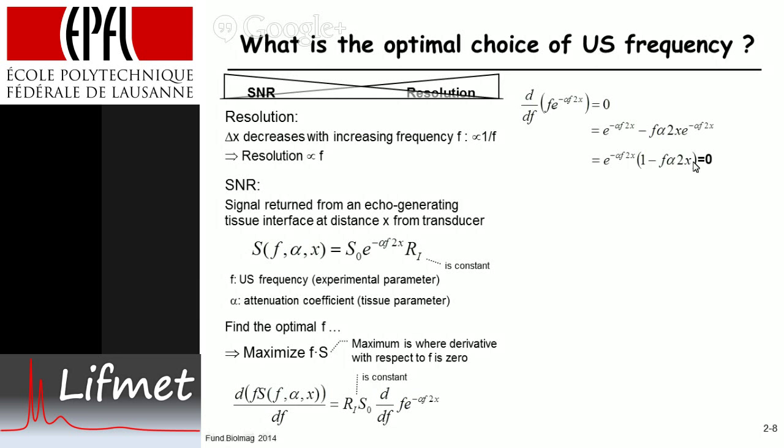So we're finding the optimal frequency is given by one over two times the attenuation coefficient and the distance of the object with respect to the transducer. The two is of course because it travels back and forth.